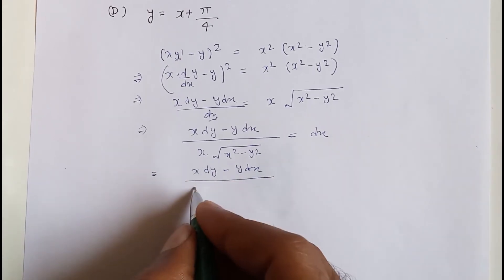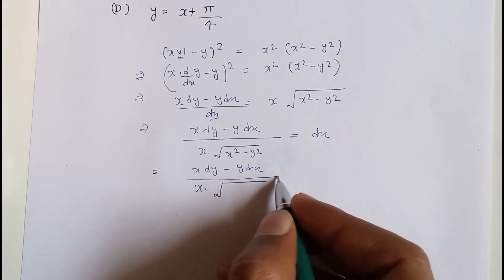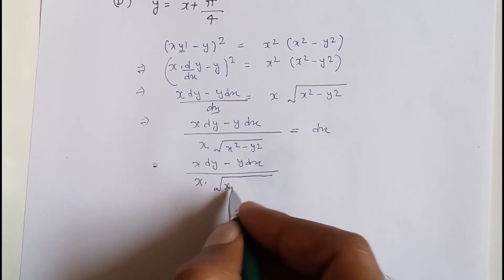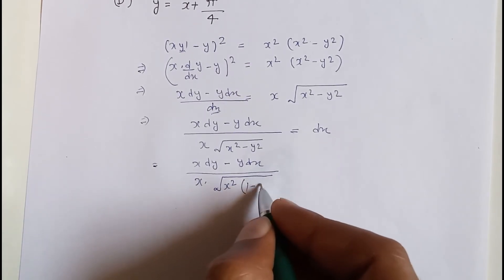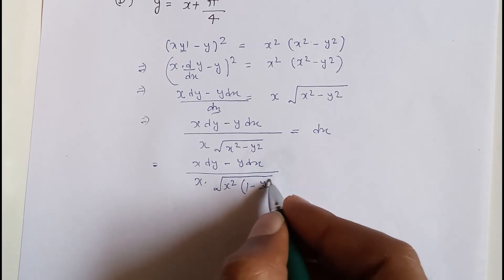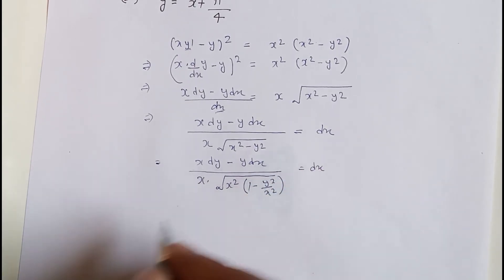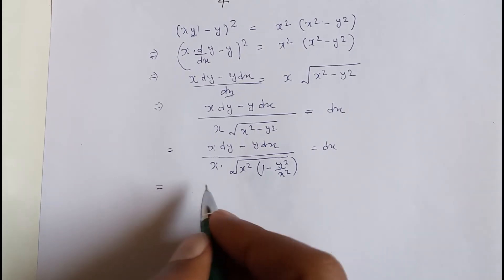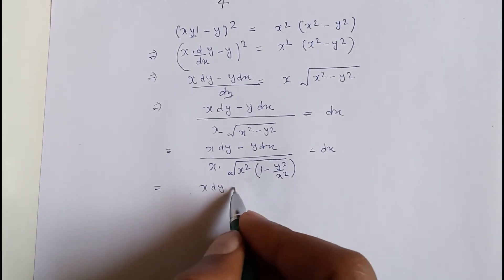Continuing to simplify: (x·dy - y·dx) divided by x times √(1 - y²/x²) equals dx. We take x² common from under the square root, giving √(x²)·√(1 - y²/x²).